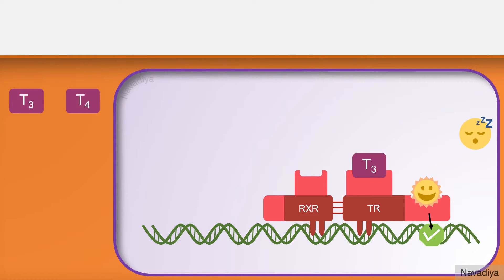Apart from this main mechanism of action, it is believed that the thyroid hormone produces immediate effects by acting on cell membrane, mitochondria, etc. So this is the mechanism of action of thyroid hormones.